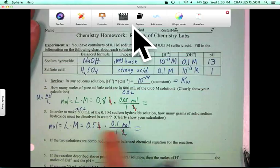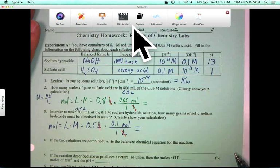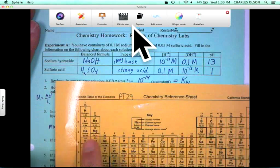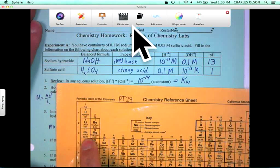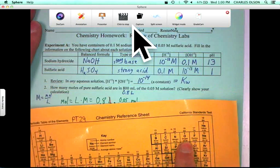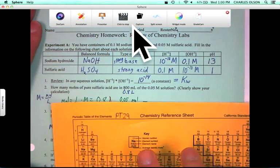And that we can, of course, calculate from our periodic table. One sodium at 23.0 grams per mole plus one oxygen at 16.0 grams per mole plus hydrogen at 1.0 grams per mole.